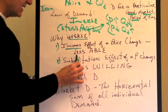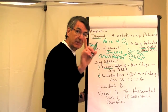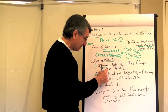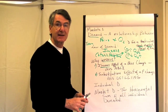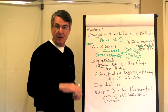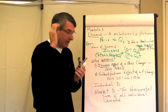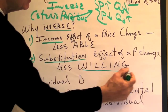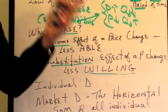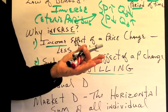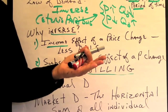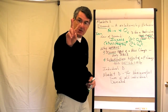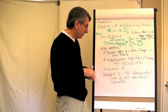The income effect of a price change says that when the price of a good goes up, people's incomes are constant, and so they are able to buy less — they are less able to buy the same quantity as before because the price increase cuts into their purchasing power if they have a fixed income. The substitution effect says that people are less willing to buy the same quantity as before because when the price of one good goes up, it makes substitutes for that good look more attractive, so people will buy more of the substitute and less of the good whose price has gone up.